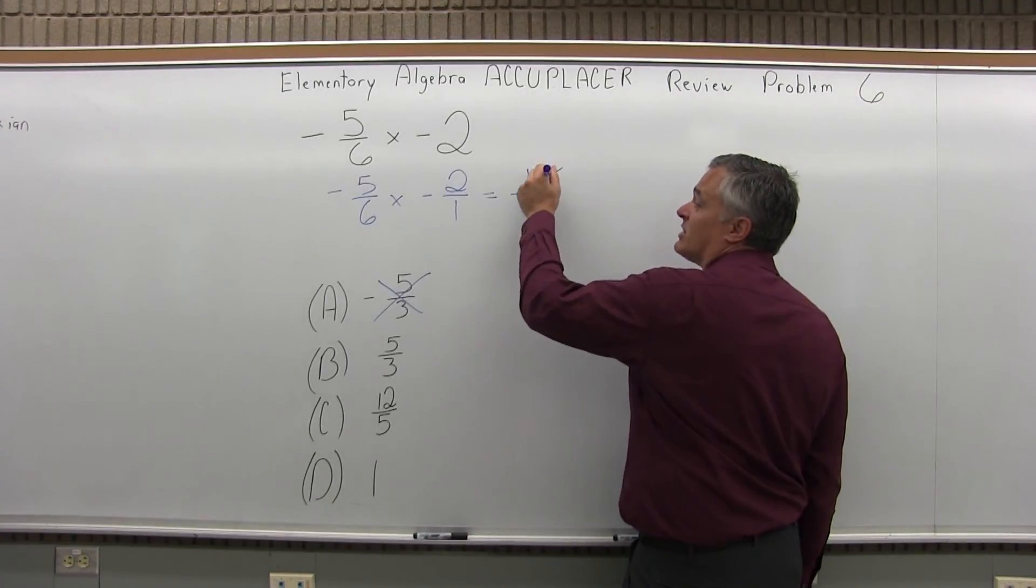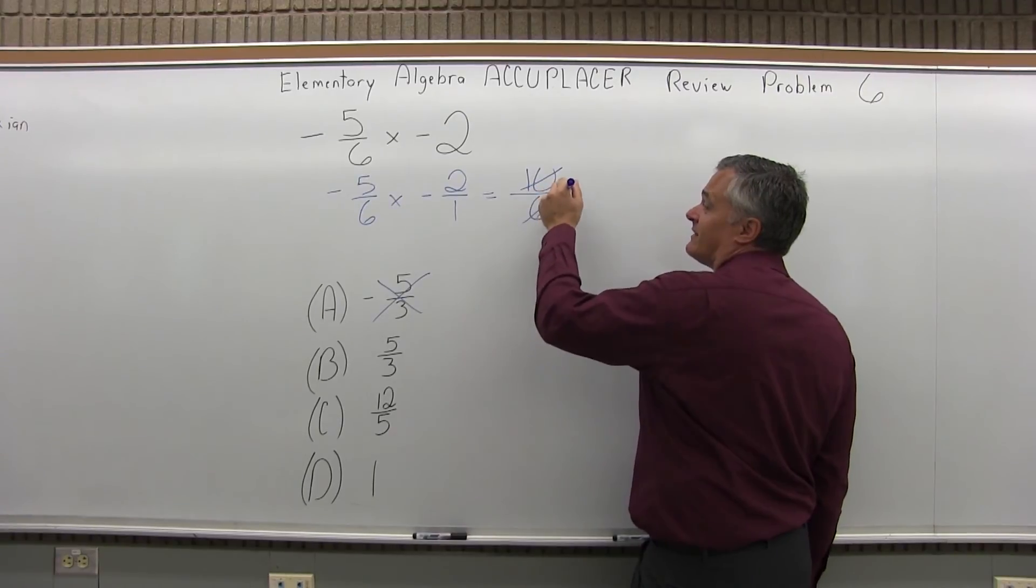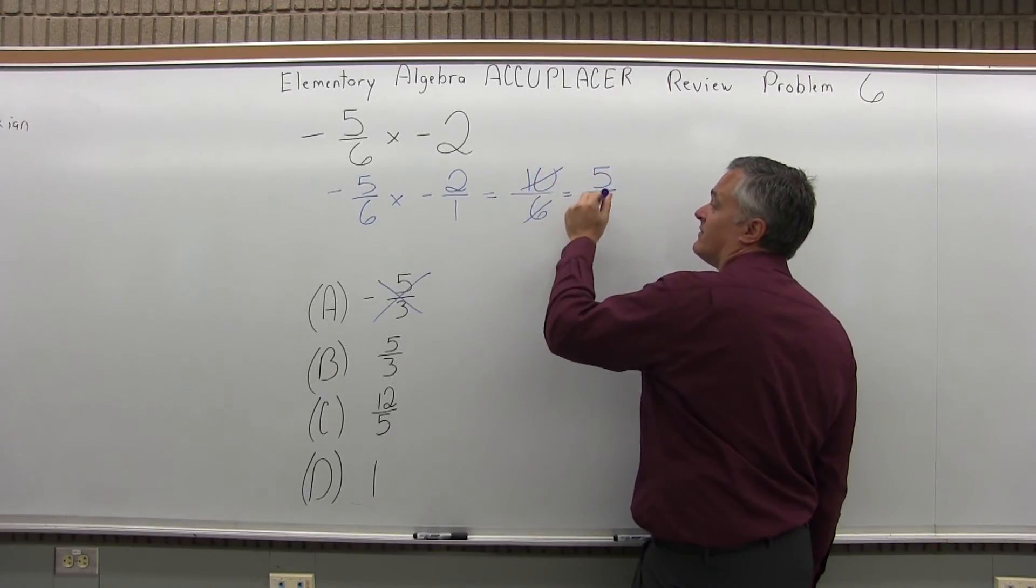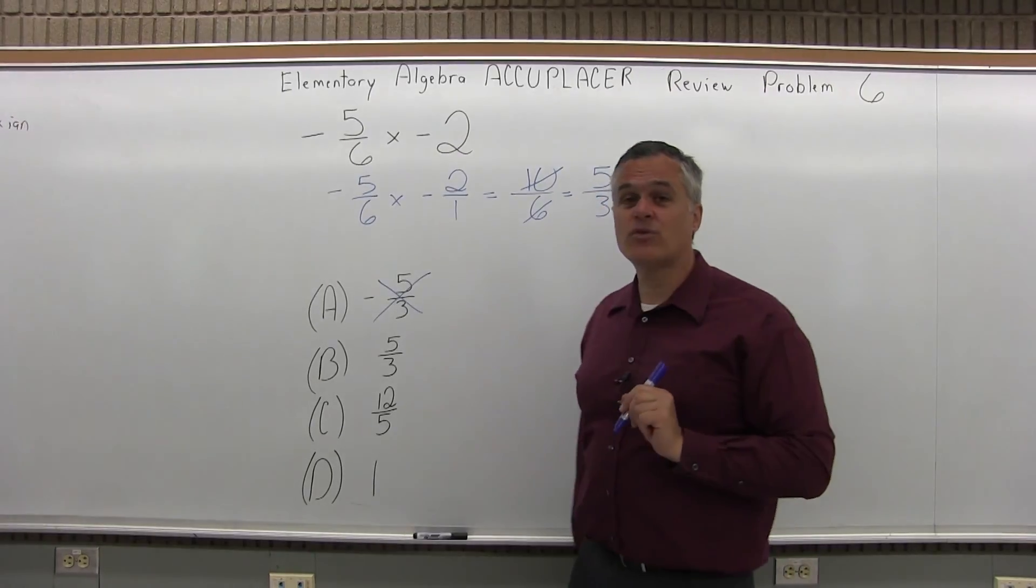The 10 and the 6 are both even. So I can reduce by cutting them in half. Let's start with that. So half of 10 is 5 and half of 6 is 3. So I have 5 over 3.